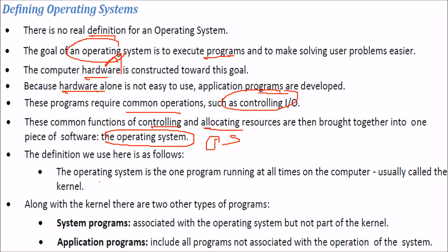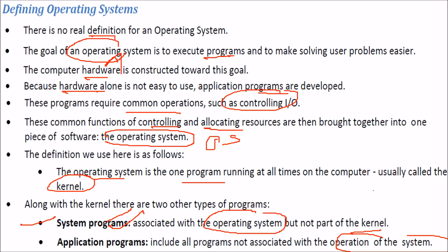The OS is the program that is running all the time on the computer — this is also called the kernel. Within the OS, there are two other types of programs: system programs and application programs. System programs are associated with the OS but are not part of the kernel. Application programs include all programs not associated with system operation — like word processors, games, and accounting software.